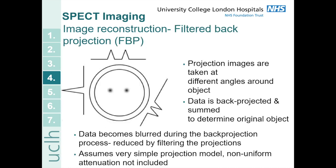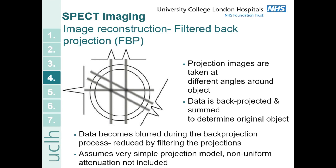Filter back projection is the simplest form of image reconstruction. Projection images are taken at different angles around your object, and the data is then back projected into the image space and summed to work out what the original object looked like. In the diagram there are two sources in the middle imaged at three different angles. For back projection you draw a straight line from your detector through imaging space for each projection, and these overlap where the sources actually are. With enough different angles the overlap shows you where the counts are. The data becomes blurred because you don't know where along the line the source is, but you can reduce this blurring by filtering the projections. This technique assumes a simple projection model and cannot account for non-uniform attenuation within the imaging space.